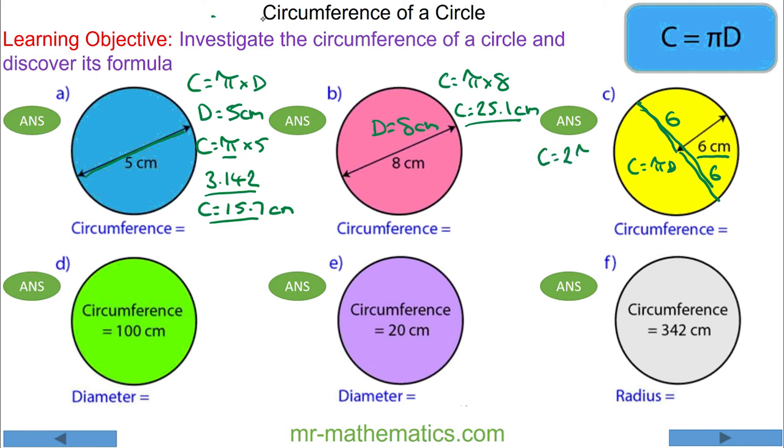So the circumference is two times pi times six, which is 12π, and that works out as 37.7 centimeters.